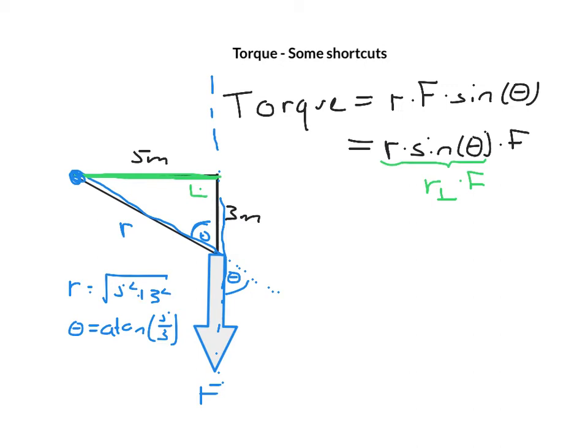Now, this works for any random situation. Let's say I have a pivot here, and I have a force acting like this. Instead of trying to figure out what is my r, I can also just make a line where my force is going and find the shortest distance. The shortest distance is perpendicular to it.